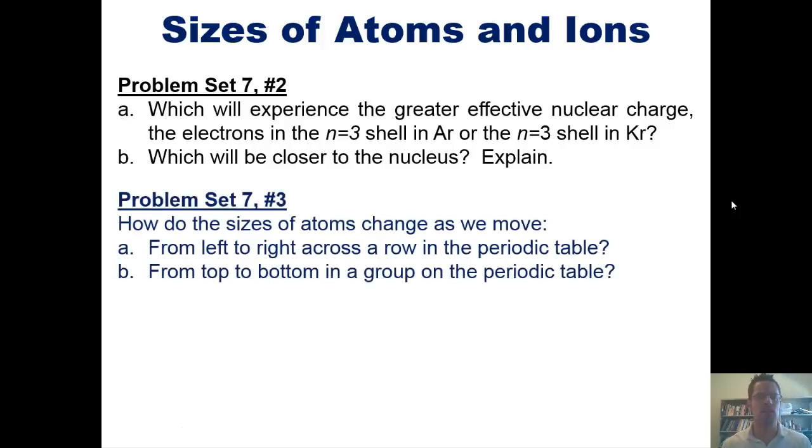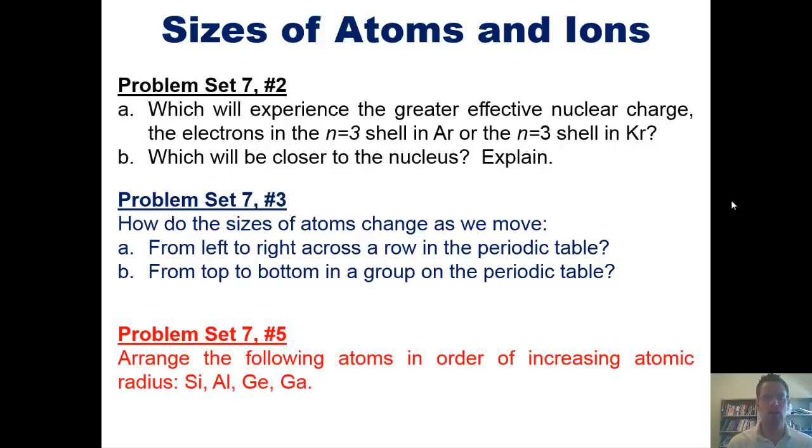Next, how do the sizes of atoms change as we move from left to right across a row in the periodic table and from top to bottom in a group in the periodic table? And arrange the following atoms in order of increasing atomic radius.